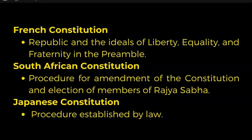The concept of Republic and the ideals of liberty, equality, and fraternity in the Preamble are taken from the French Constitution. The procedure for amendment of the Constitution and election of members of Rajya Sabha are taken from the South African Constitution, and the procedure established by law is taken from the Japanese Constitution.